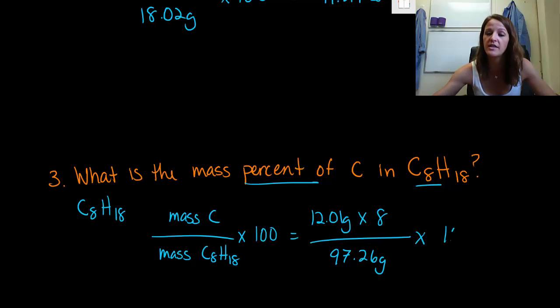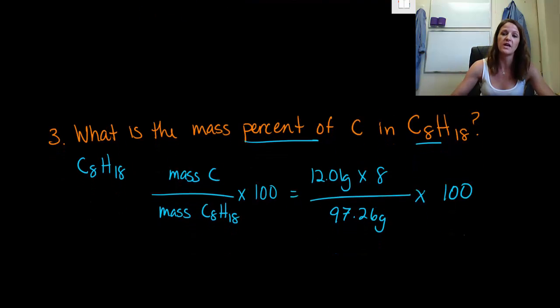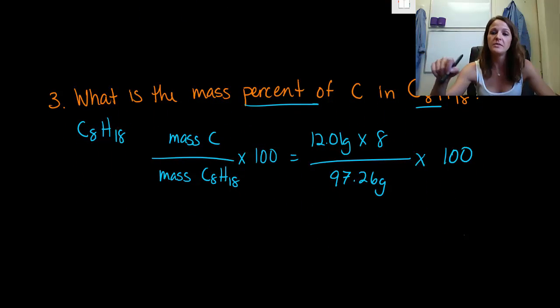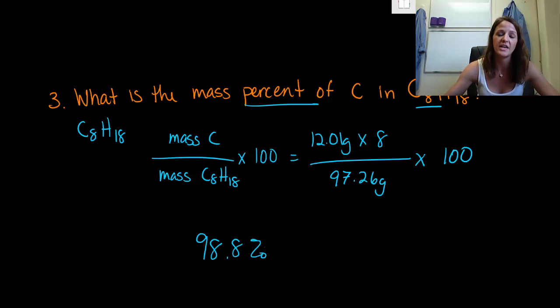Again, we have to multiply this times 100 because this is a mass percent, but if we do 12 times 8 divided by 97 and multiply that times 100, we end up with a mass percent of carbon in octane close to 98.8 percent. So the majority of octane, this beautiful source of fuel, is almost 100 percent carbon. No wonder it's such a great source of fuel, right?